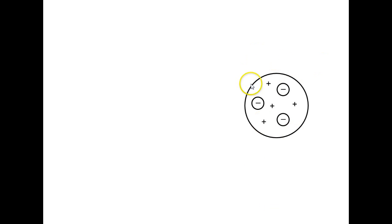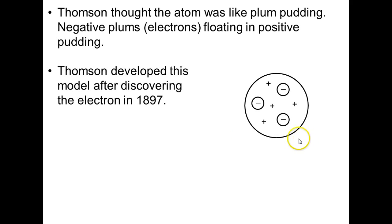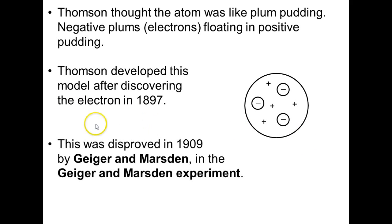Here we have Plum Pudding. Plum Pudding is made up of gelatin-like pudding, and then interspersed throughout are these plum pieces. Thomson thought the atom was like plum pudding. Negative plums, electrons, floating in positive pudding. Thomson developed this model after discovering the electron in 1897.